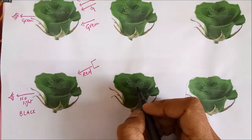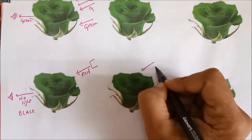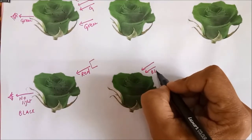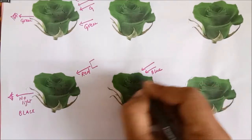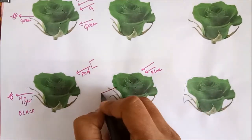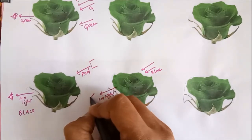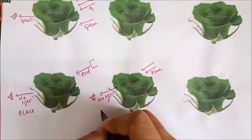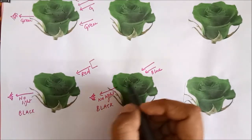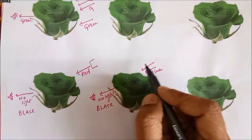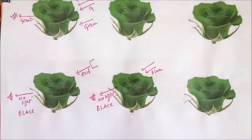In the same way, when you impart blue light on it, these pigments are entirely going to absorb the blue light. Again, no light reaches your eye and it appears black. So in blue light also, this green rose appears black.